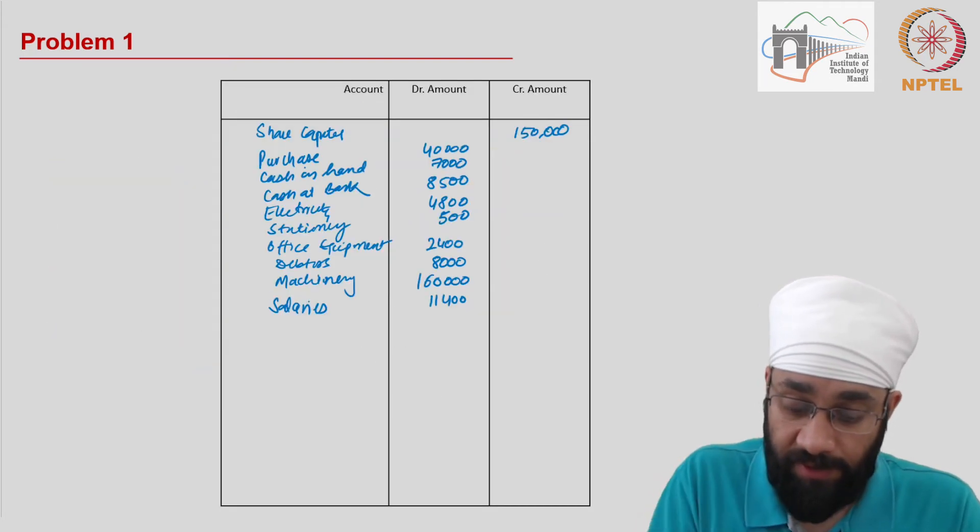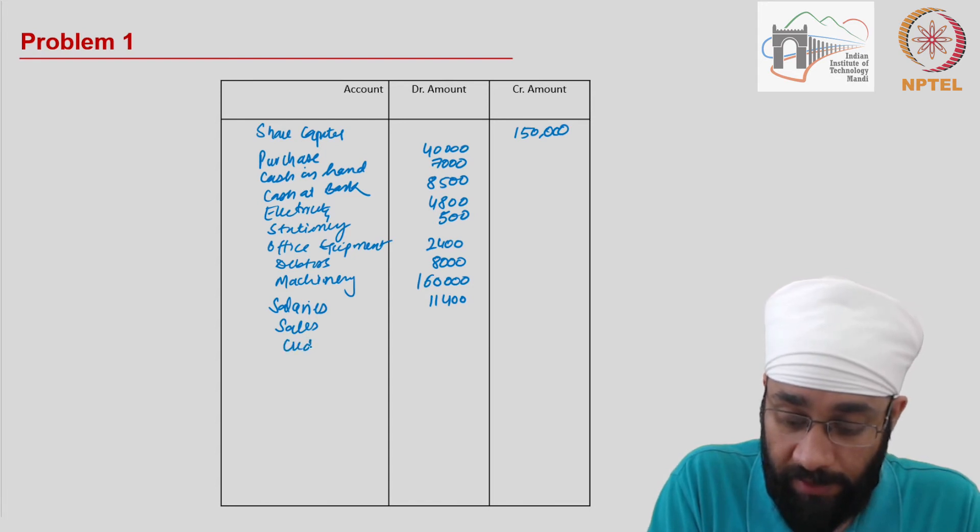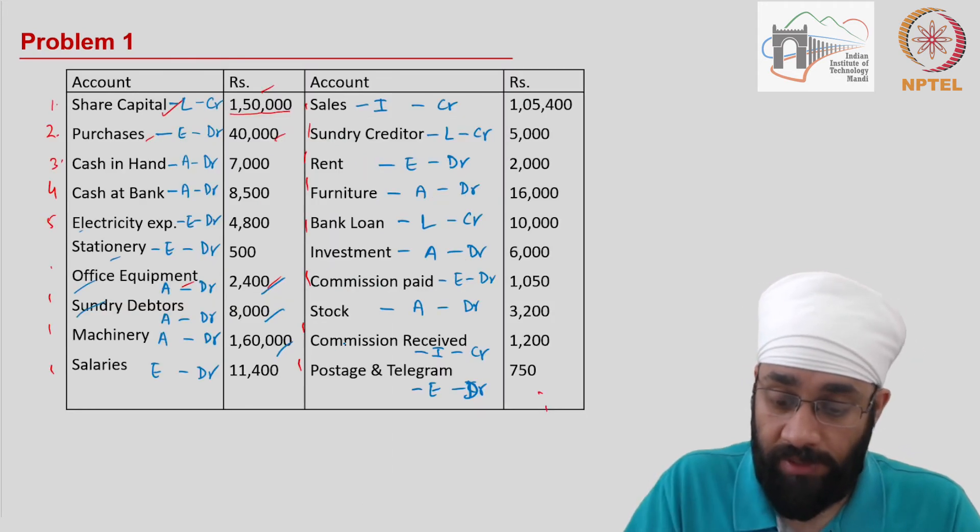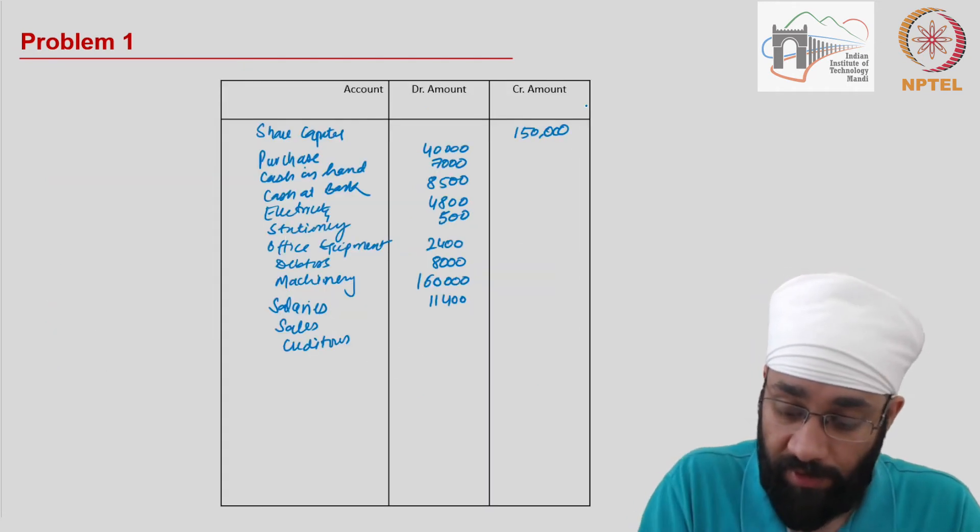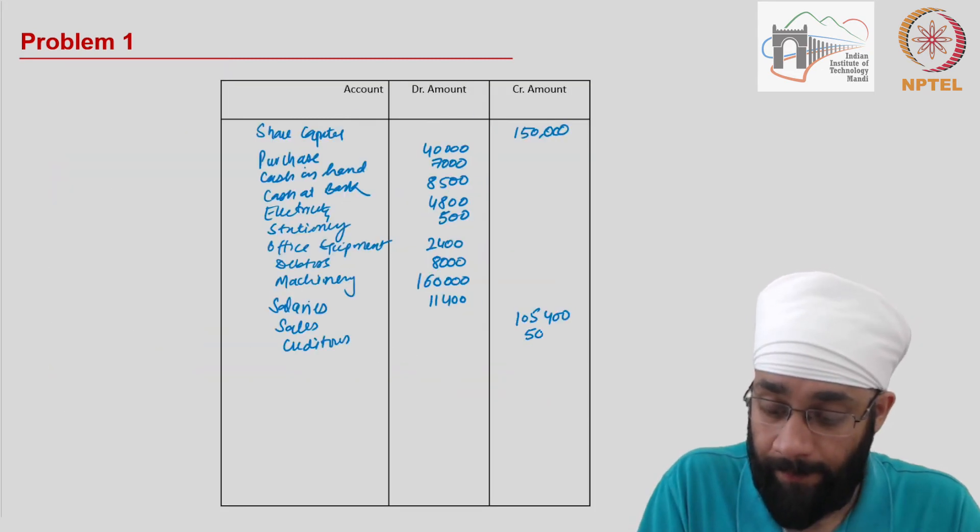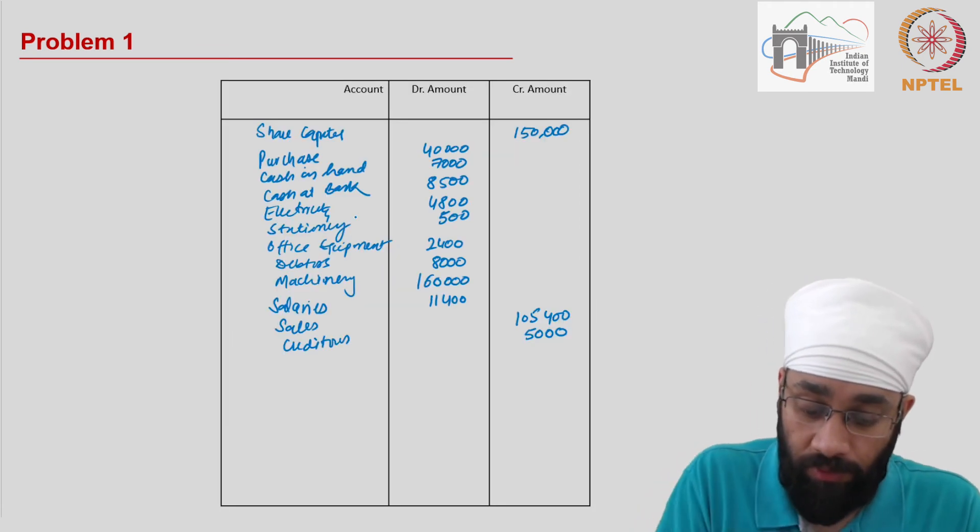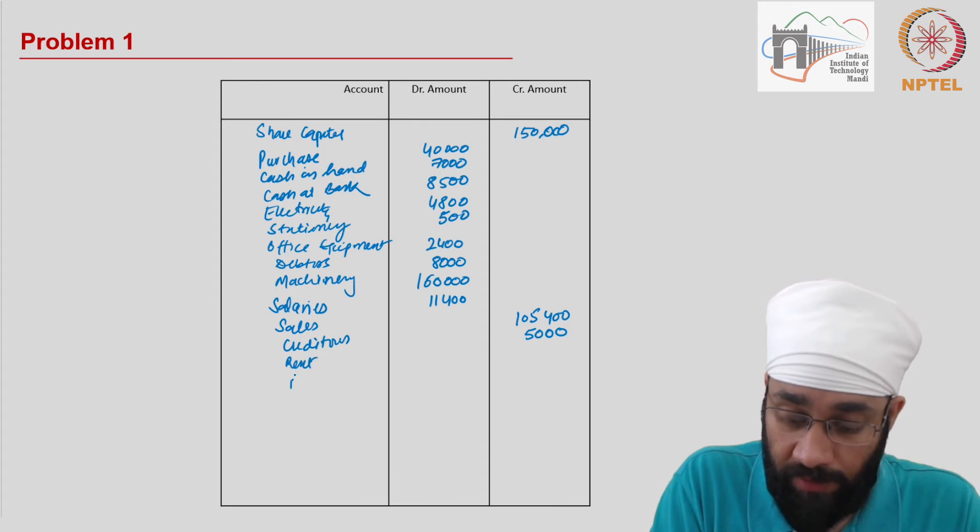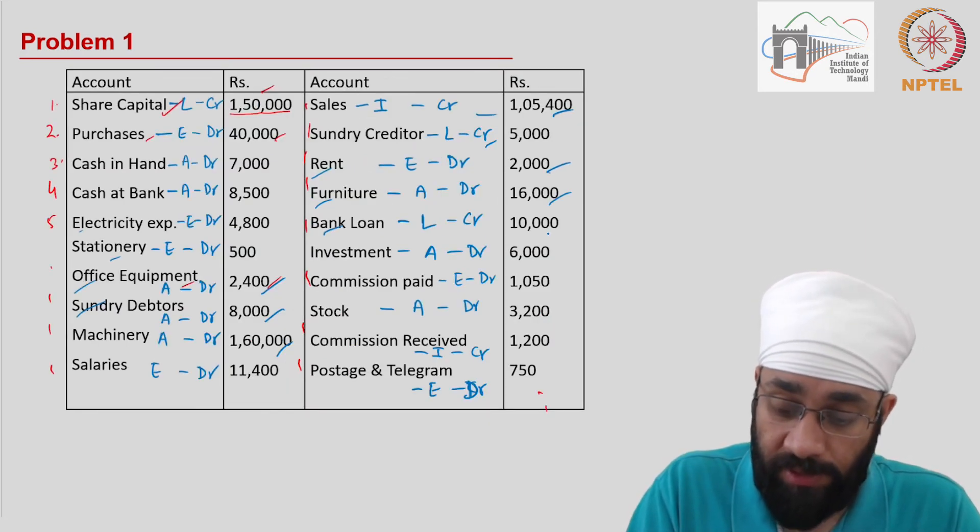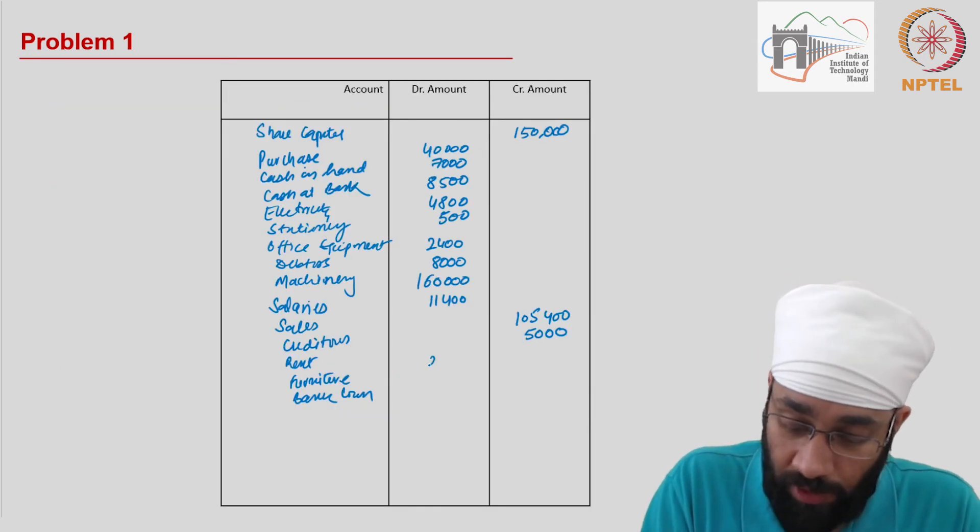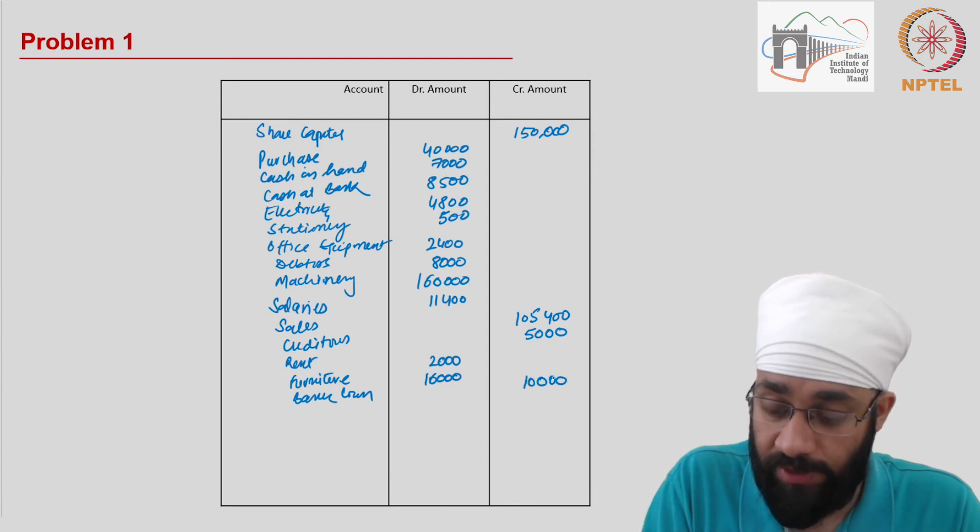You have sales and creditors. These are credit balances. $105,400 and $5,000. Then you have rent, furniture and bank loan. The amounts are $2,000, $16,000, and $10,000. Bank loan is a credit balance.